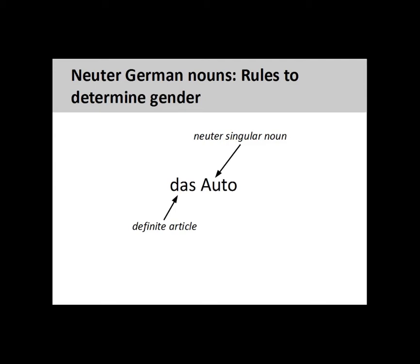The German noun Auto, meaning car, has a neuter grammatical gender, so its definite article is das. Don't forget that it is important to memorize the definite article with the noun. Although the grammatical gender of German nouns is sometimes difficult to determine, there are some rules that can help you.